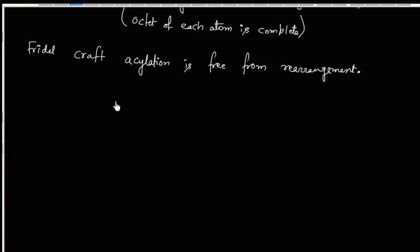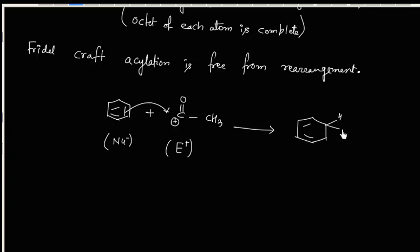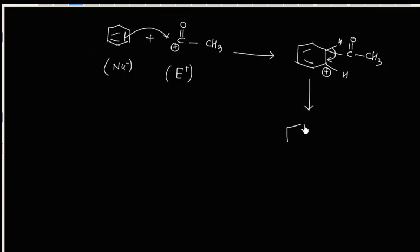Now we have generated the electrophile, so we can do electrophilic aromatic substitution. The benzene ring will act as the nucleophile and the acylium ion will act as the electrophile. We will get this intermediate product, and in the next step we can lose H+ to regain aromaticity and give the final product.